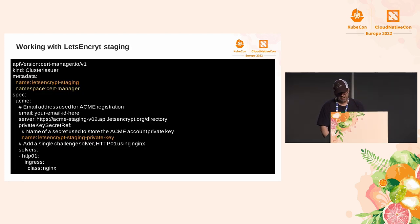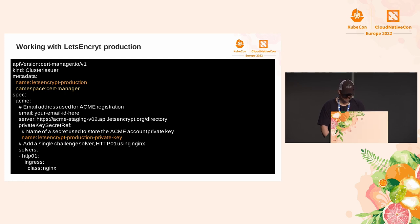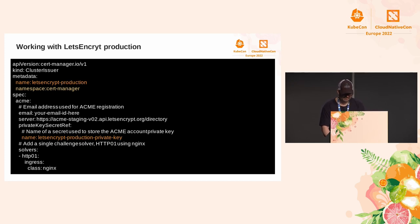In this example we are creating a ClusterIssuer object called 'letsencrypt-staging' that uses the Let's Encrypt staging server. We also create a Kubernetes Secret called 'letsencrypt-staging-private-key' to store the private key of the certificate. For production, we only need to change the name from 'letsencrypt-staging' to 'letsencrypt-production' in the metadata name.